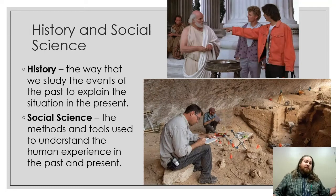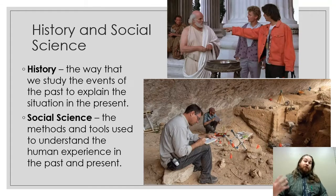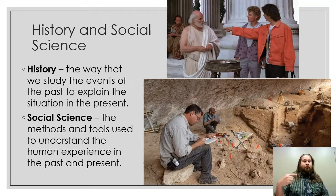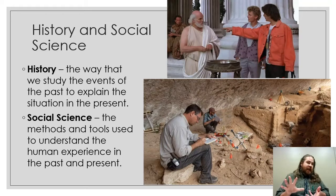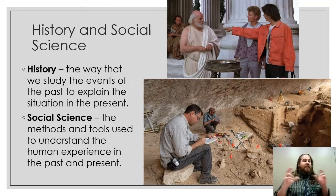So we'll start off the year by talking about: what are we going to be doing in class? What is history? What is social science? The way we understand history is very simple. History is the way that we study the events of the past in order to explain the present. Think about who you are today as a junior or a senior in high school — all the things that led to that point, all your experiences, your beliefs. That is what we're talking about. We're talking about history.